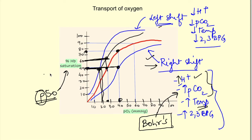In summary, oxygen is transported in dissolved form and bound to hemoglobin. We explored the oxyhemoglobin dissociation curve, its right and left shifts, the effects of carbon monoxide, and how fetal hemoglobin and myoglobin curves differ from adult hemoglobin. Thanks for watching — if you liked the video, press like, share it, and subscribe to the channel Physiology Open.